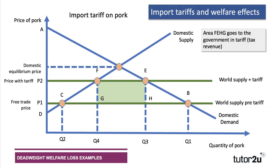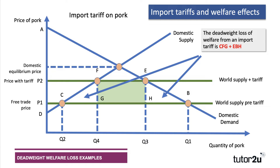But there are two areas of consumer surplus that haven't gone to domestic producers or to government as tax revenue, and these are indeed the welfare losses. The deadweight welfare loss from a tariff is the area C, F, G and E, B, H. This is consumer surplus that is lost — it doesn't go to producers or government — it becomes a deadweight loss. And that is the area of deadweight loss of welfare due to an import tariff.